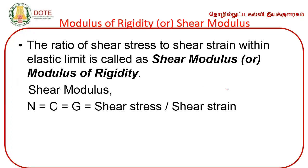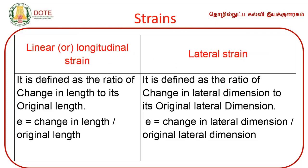Modulus of rigidity, or shear modulus, is the ratio of shear stress to shear strain within the elastic limit. Linear strain, or longitudinal strain, is the ratio of change in length to original length. Lateral strain is the ratio of change in lateral dimension to original lateral dimension.